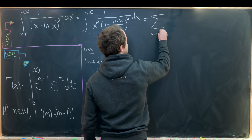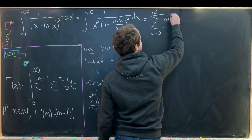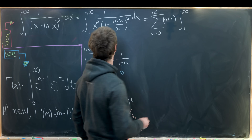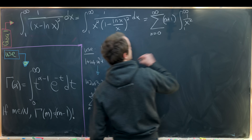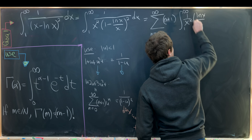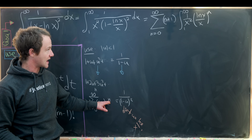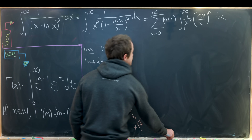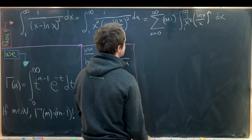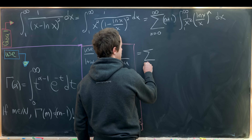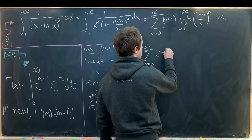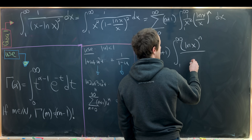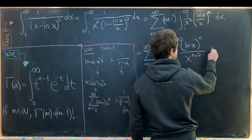This gives us the sum as n goes from 0 to infinity of (n+1) times the integral from 1 to infinity of 1/x² times (ln(x)/x)ⁿ dx, which simplifies to the sum of (n+1) times the integral from 1 to infinity of (ln x)ⁿ / x^(n+2) dx.